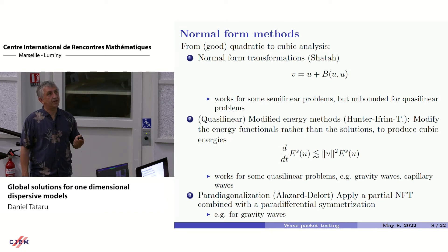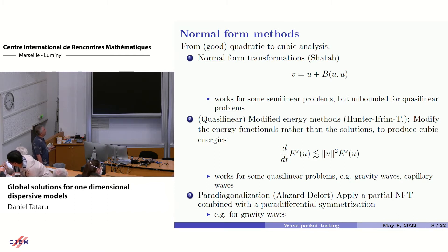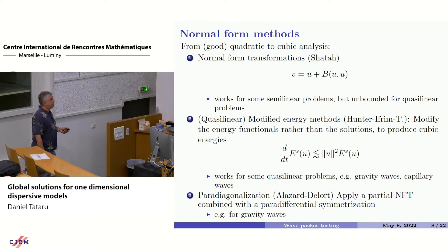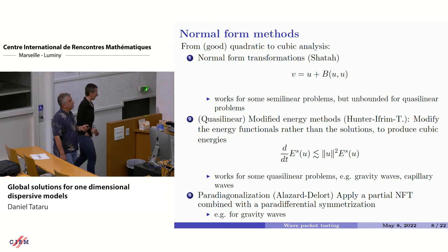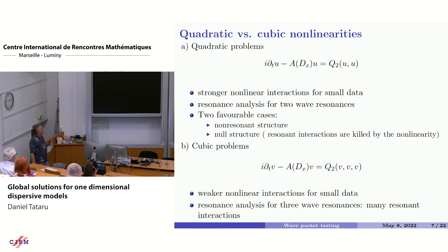In the realm of quasi-linear problems there are maybe two interesting ideas of how you can get around the unboundedness of the normal form transformation. One, which we call the modified energy method, came up in work with Mihaela and with John Hunter: instead of transforming the solutions it's better to construct adapted energies — cubic energies — meaning the energy estimate looks like one for a cubic nonlinearity. Another idea is the paradiagonalization introduced by Alazard and Delort, which consists in applying a partial normal form transformation — essentially the bounded part of the normal form transformation.